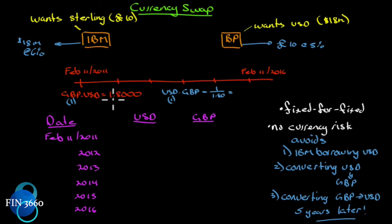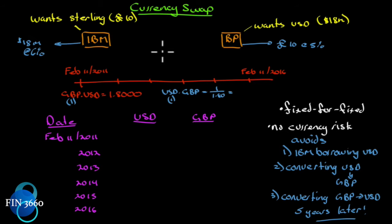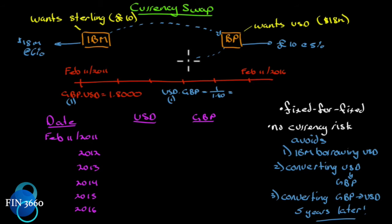The spot rate is 1.80, so 10 million pounds — at $1.80 US per pound — equals 18 million US dollars. Contrary to what happens in an interest rate swap where they only swap interest payments, in a currency swap on day one IBM gives BP the 18 million US dollars and BP gives IBM the 10 million pounds. They actually swap the principal on day one.